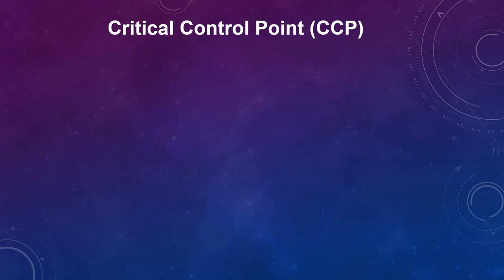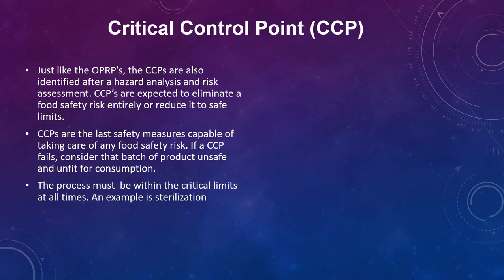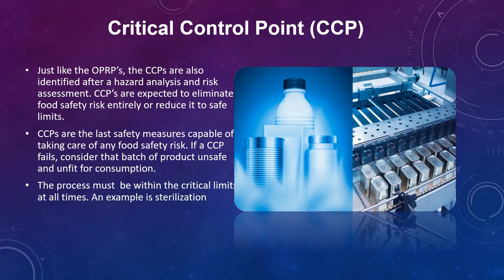Next is CCP, which is abbreviated as Critical Control Points. It is like OPRP in that CCPs are also identified after a hazard analysis and risk assessment. CCPs are expected to eliminate a food safety risk entirely or reduce it to safe limits. This line is very important: CCPs are the last safety measures capable of taking care of any food safety risk. If a CCP fails, consider that batch of product unsafe and unfit for consumption. So CCP is the last safety measure — keep that in mind. The process must be within the critical limits at all times. An example is sterilization.